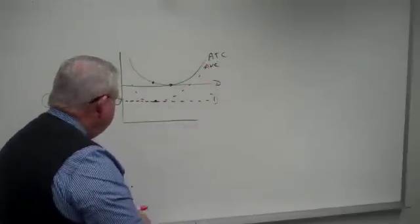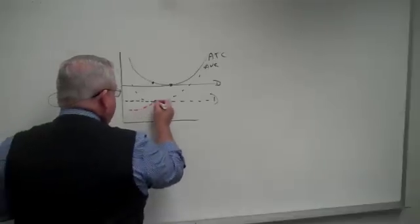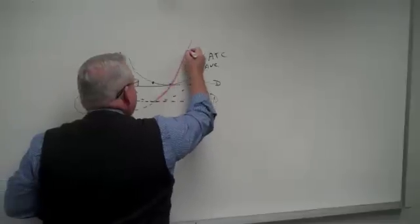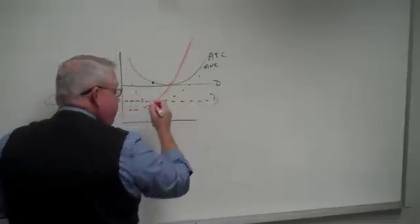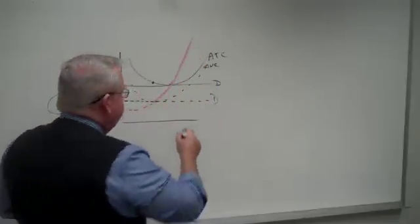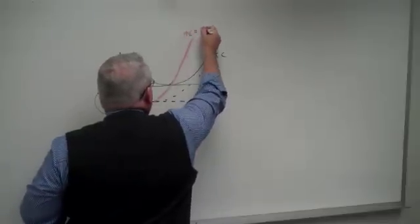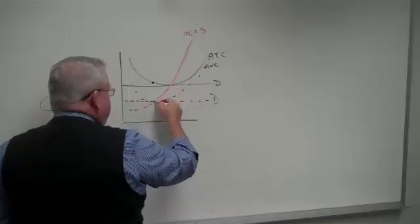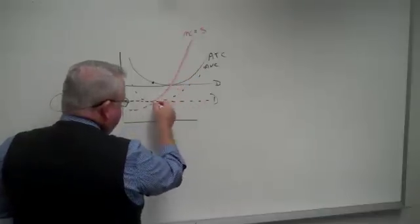And so we said in the short run then when you look at the marginal cost curve, this was the short run supply curve for the firm. Does that sound familiar? That's their supply curve. The marginal cost curve, same thing as the supply curve. And in the short run it's the marginal cost curve all the way down to the bottom of the AVC.